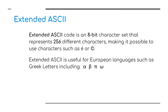Now obviously 128 characters doesn't give us a lot of scope for storing numbers, symbols, letters etc. So in the 1980s a version of ASCII came out called Extended ASCII, which allowed for not seven bits but now eight-bit character sets, doubling the number from 128 to 256 different characters. This enabled the storage of characters such as the copyright sign, letters with accents over them, and various other European languages such as the Greek alphabet including alpha, beta, pi and omega.